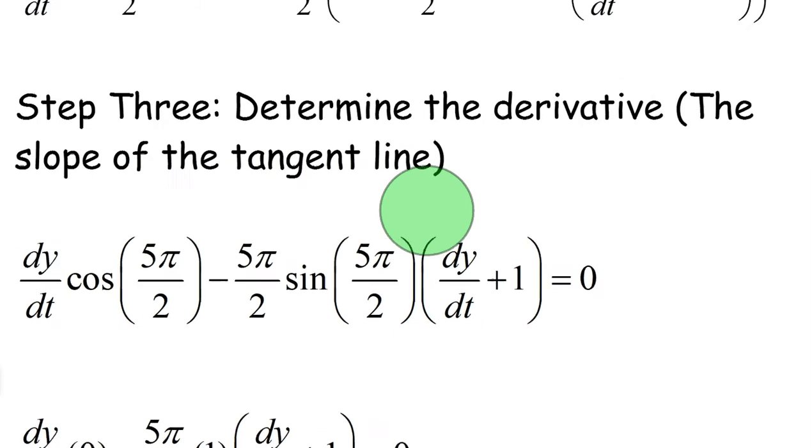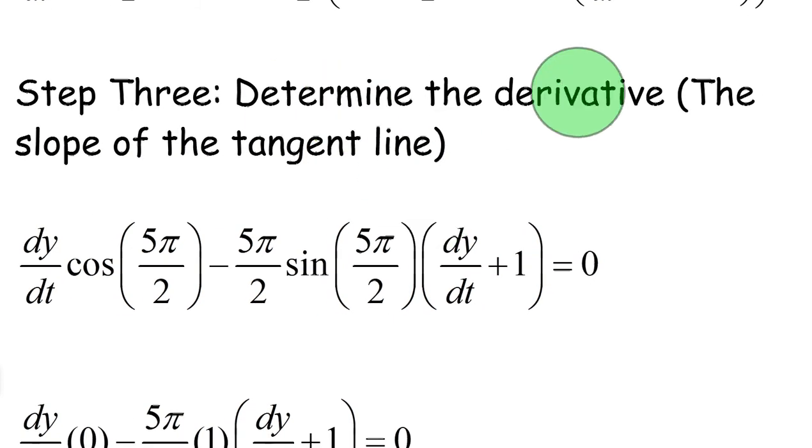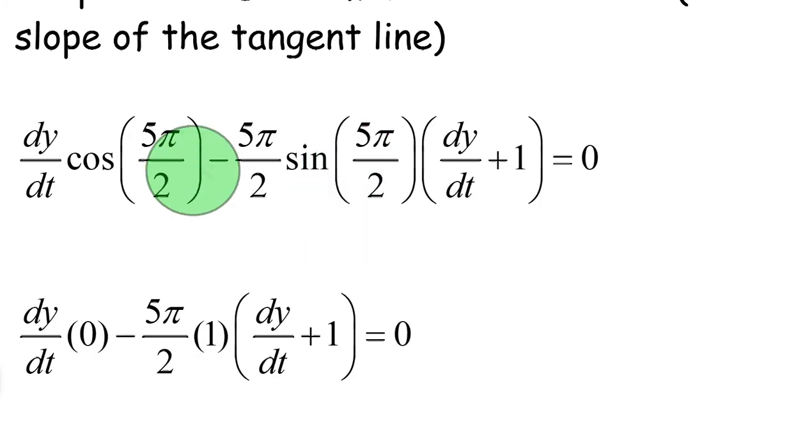So, this will all simplify down to, lead us to step 3, which is to determine the derivative when you plug that point in, which will give us the slope of the tangent line. Now let's talk about this stuff. This is going back to the unit circle. Cosine of 5π over 2 is actually going to be 0. It's the same as π over 2, and the x value is 0 in the unit circle. Sine of 5π over 2 is actually the same as π over 2. You've actually gone the same distance around the circle.